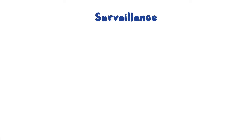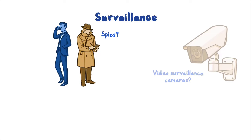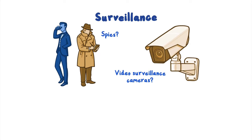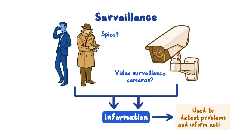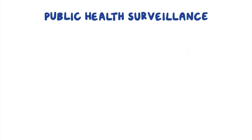When you hear the word surveillance, what does it make you think of? Spies? Video surveillance cameras in stores and on buildings? Spies and surveillance cameras are constantly monitoring to collect information that might be useful in some way. The information collected is used to detect problems and help inform actions. Public health surveillance is similar but uses different tools and strategies to collect information.